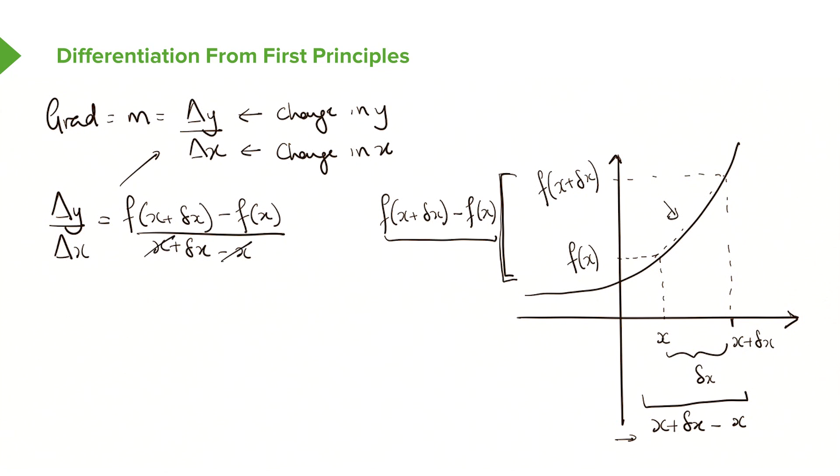We can make this a little bit fancier by using a different notation for delta y over delta x. We can write this as dy by dx, which is basically the notation that we use for differentiation. And if we rewrite this, we get f of x plus delta x minus f of x all over delta x. Now this here is the derivative of, or the definition of a derivative. But we also call it differentiation from first principle. So it's differentiation done by first principle.